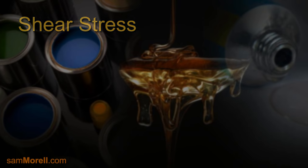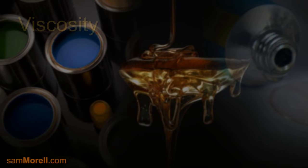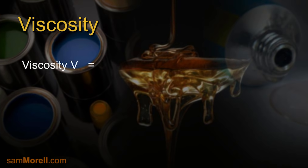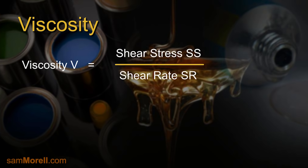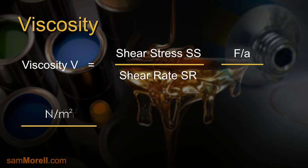Now that we understand shear stress and shear rate, let's revisit viscosity once again so that we can define it more precisely. The viscosity of the material is the shear stress divided by the shear rate. Remember that shear stress is a force over a specified area. This can be in the form of pounds per square inch, or newtons per square meter, whereby one newton is equivalent to about 0.225 pounds of force, or even dynes per square centimeter, where one dyne is equivalent to about 0.225 times 10 to the minus 5th pounds of force.